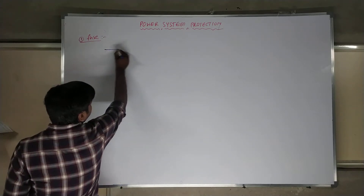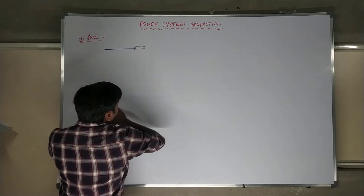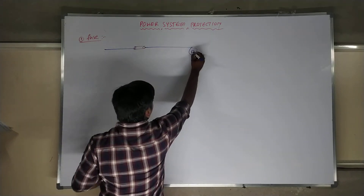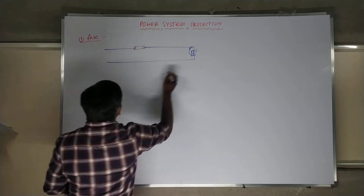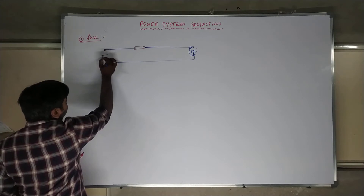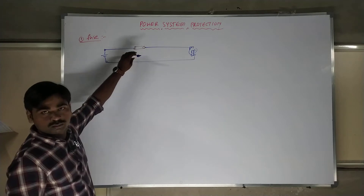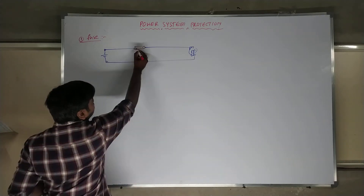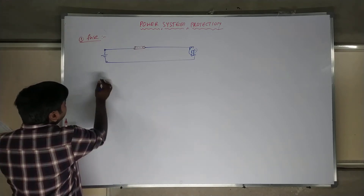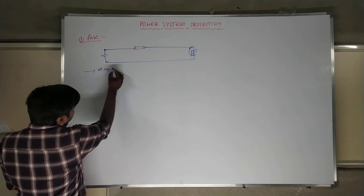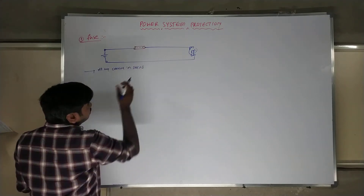For example, this is a circuit — we connect the fuse here, followed by your device, say a motor as a load, and you connect your fuse. It is the power supply you are providing. The fuse is a short piece of metal wire connected in series. The fuse is always connected in series — that is one of the most important points.